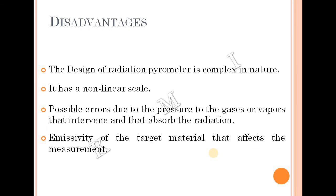The design of a radiation pyrometer is complex in nature. It has a non-linear cycle and possible errors due to pressure from gases or vapors that absorb the radiation. Errors can also arise from emissivity variations of the measured surface.